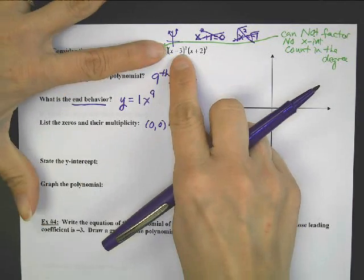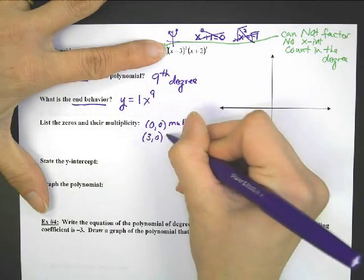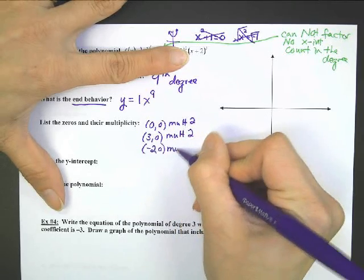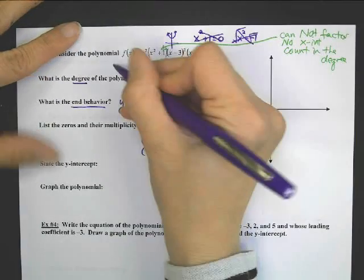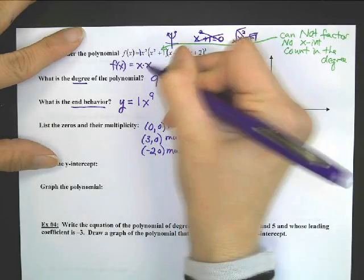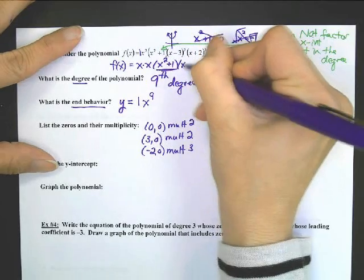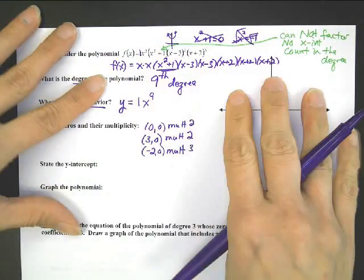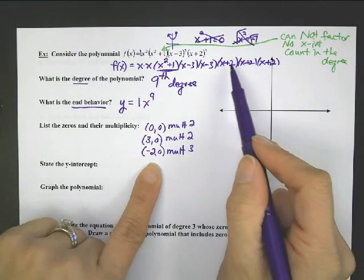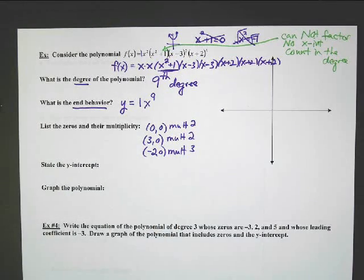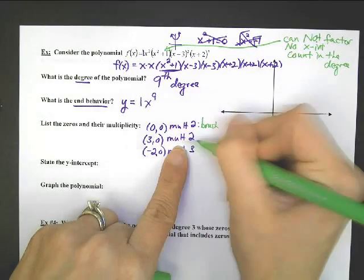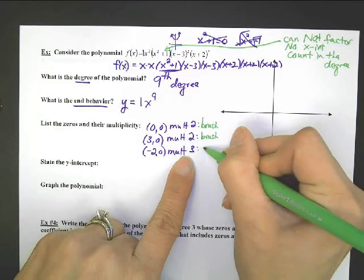This factor gives us 3, 0 with multiplicity 2. This last factor has a single x, giving us negative 2, 0 with multiplicity 3. If you're not sure, you can spread this out: x times x times x squared plus 1 — see how that part doesn't factor — then x minus 3, x minus 3, x plus 2, x plus 2, x plus 2. So negative 2 appears 3 times, and 3, 0 appears twice. After we state multiplicity 2 for 3, 0, it's going to brush. And negative 2, since it's odd, is going to cross.